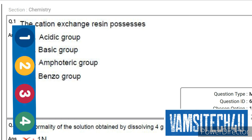First question: The cation exchange resin possesses... the correct answer is first one, that is acidic group.